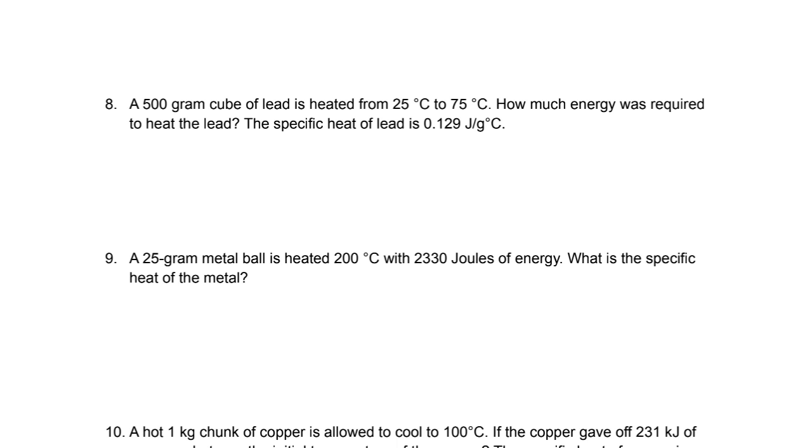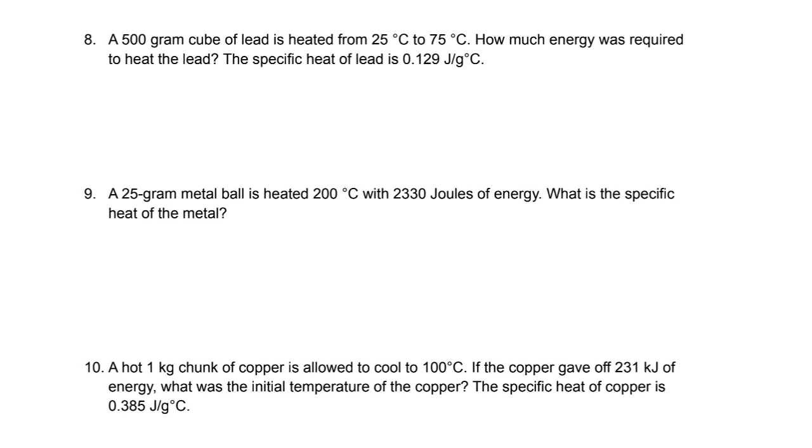On to problem number eight. We've got a 500 gram cube of lead. It's heated from 25 degrees Celsius to 75 degrees Celsius. How much energy is required to heat that lead? So this is a clear Q equals mc delta T problem. We're not going through any phase changes. It's going to be solid lead on both ends. It's just going to change temperature 50 degrees. So make sure your mass units match up. Our mass is 500. Our specific heat is 0.129. And our change in temperature to go from 25 degrees to 75 degrees is 50 degrees. I'll just multiply these three numbers. And I get 3,225. What are the units? It is joules. That's how much heat we need to put into the system to cause that temperature change. Or if we went the opposite direction, that's how much heat would be released.